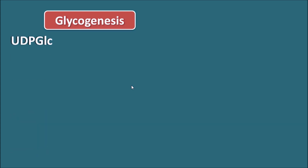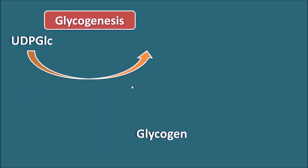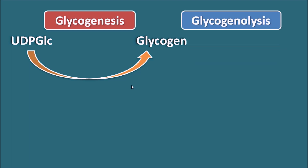Glycogenesis is the process of conversion of glucose to glycogen. Glucose is initially converted into UDP glucose, which is then converted into glycogen by addition to a glycogen primer. In this way, glucose is polymerized to the growing chain of glycogen. Glycogenolysis involves the breakdown of glycogen to produce glucose 1-phosphate, which is then further converted into glucose.